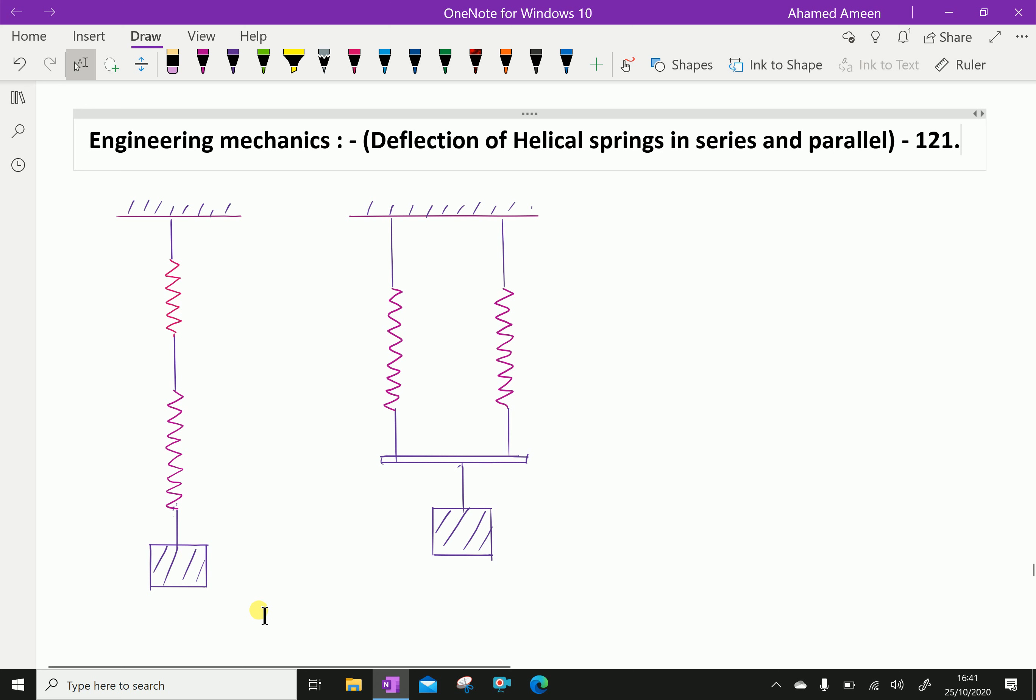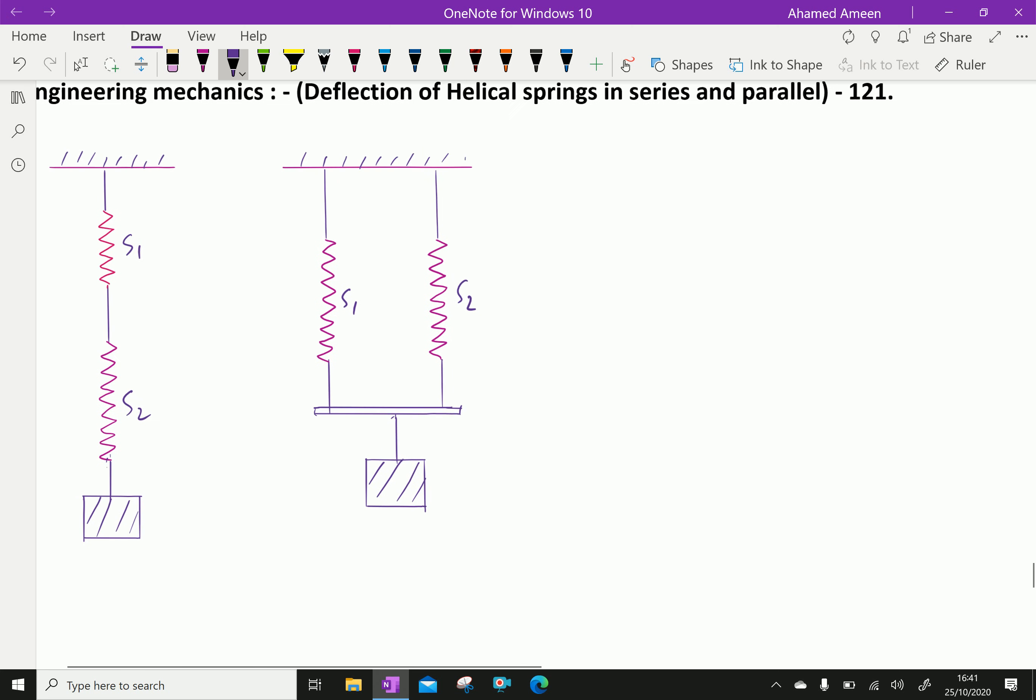Let S1 is a stiffness of first spring. S2 is for second spring. Now, first in series, springs are in series.